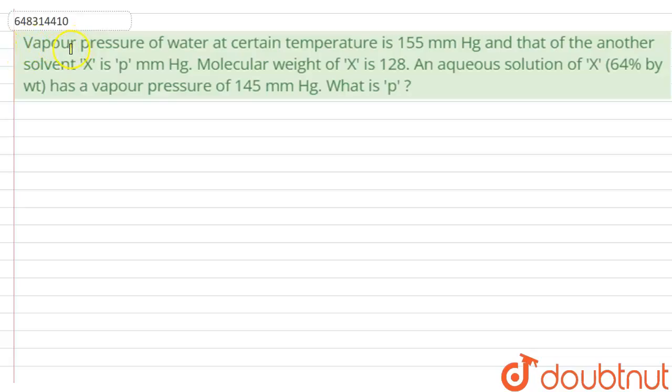Hello everyone. The question is: vapor pressure of water at a certain temperature is 155 mmHg, and that of another solvent X is P mmHg. The molecular weight of X is 128, and an aqueous solution of X, 64% by weight, has a vapor pressure of 145 mmHg. What is P?